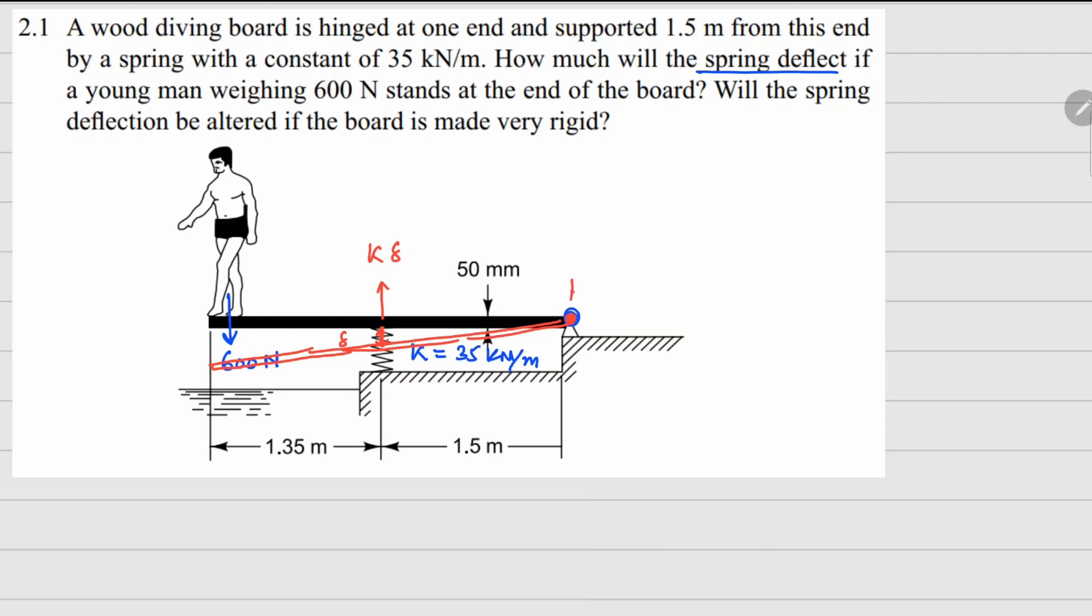Your k delta about this point is going to give you an anticlockwise moment with a distance of 1.5 meters and which will be balanced by this moment coming from the weight 600 newtons here and that is sitting at a distance of 1.5 plus 1.35, so 2.85 meters.